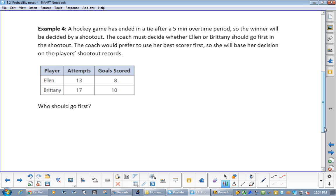So, next, hockey game has ended in a tie, five-minute overtime period, so the winner will be decided by shootout. The coach must decide whether Ellen or Brittany should go first in the shootout. The coach would prefer to use her best scorer first. So, she will base the decision on the player's shootout records. This one's almost too easy. I think a person that hasn't been showing up all year would get this question.